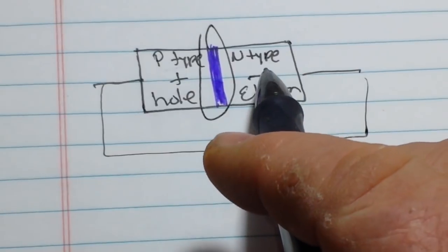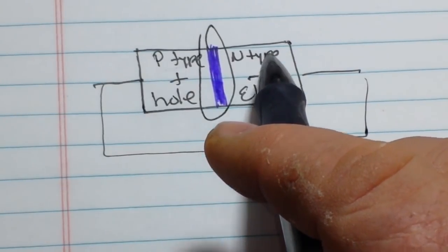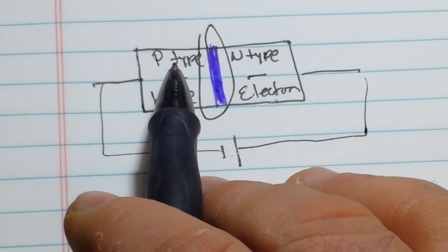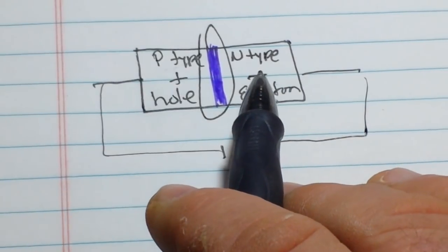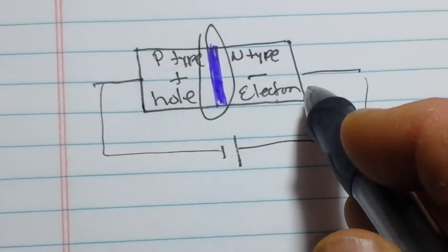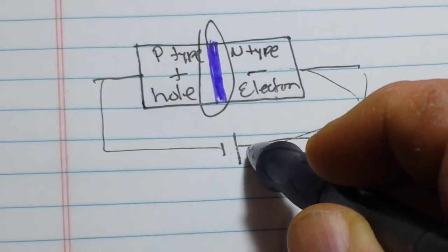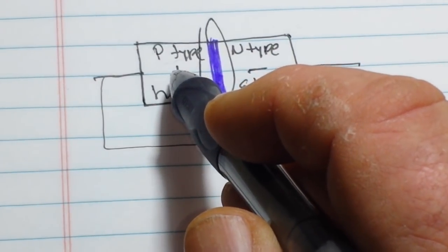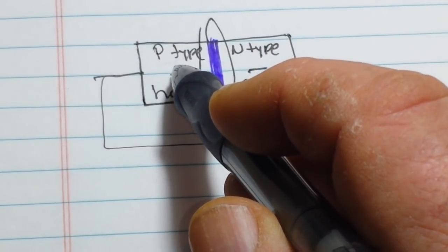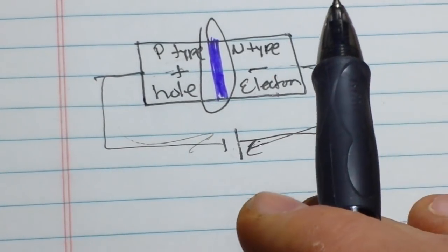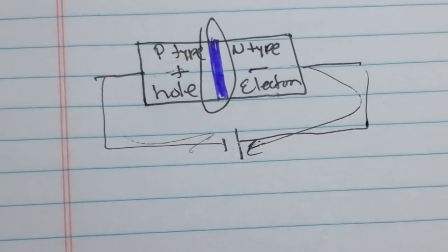And the reason for that is this area right here called the depletion layer. And even though the N-type silicon is a conductor by itself, and the P-type silicon is a conductor by itself, the negative electrons in the N-type silicon get attracted to the positive terminal of the battery. And the positive holes in the P-type silicon get attracted to the negative terminal of the battery. And nothing will flow because everything is moving in the wrong direction.